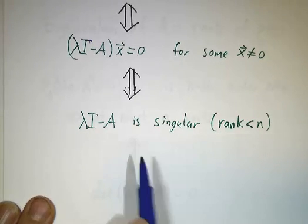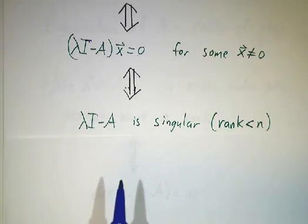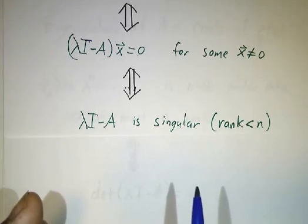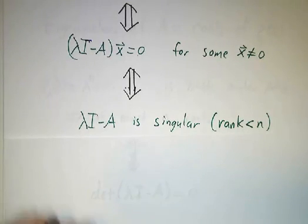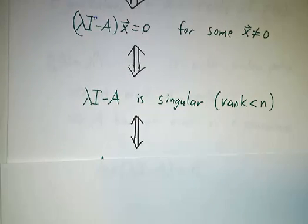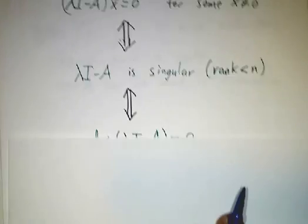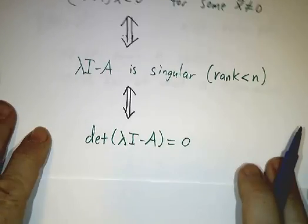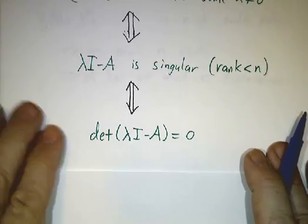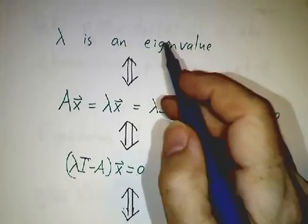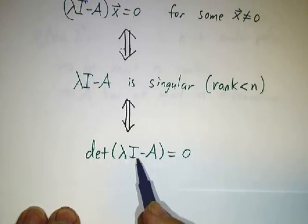And how can we test whether a matrix is singular? Well we have this magic oracle called the determinant. If the determinant is 0, then the matrix is singular. And if the determinant is non-zero, then the matrix is non-singular. So in other words, lambda is an eigenvalue if and only if this funny determinant is 0.